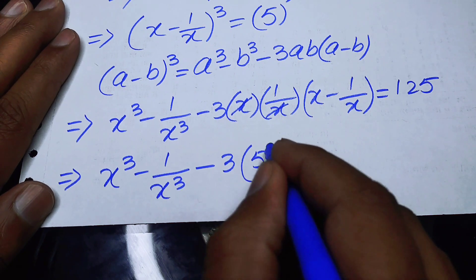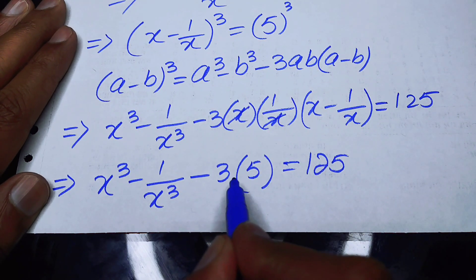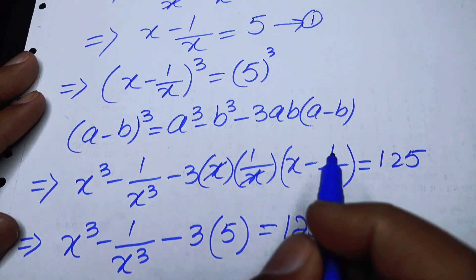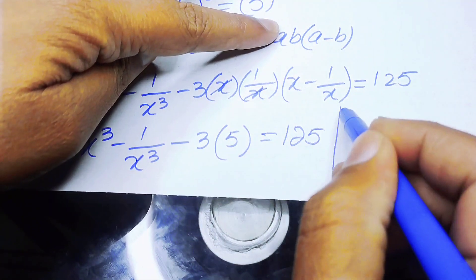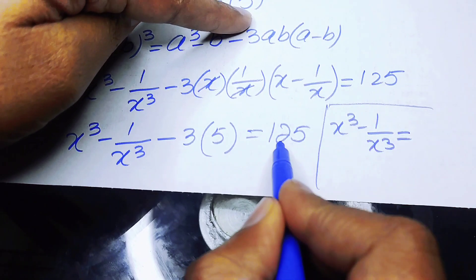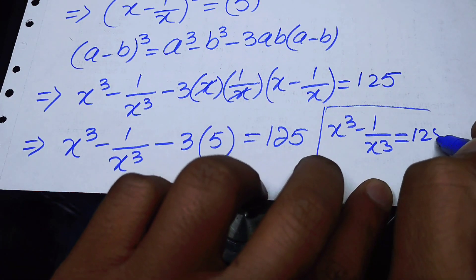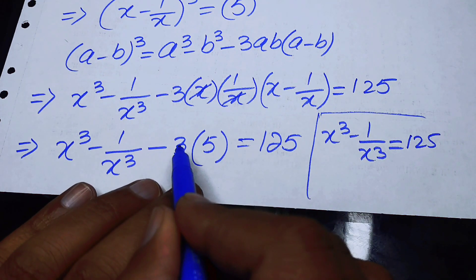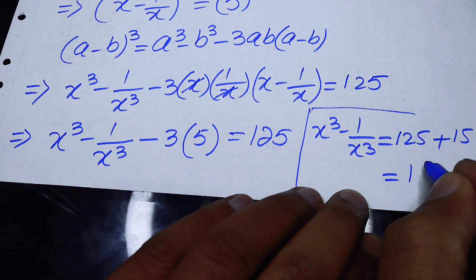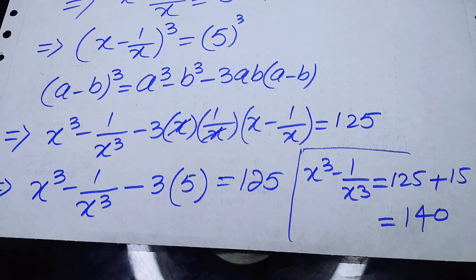Using equation 1, minus 3 times 5 becomes minus 15. Taking minus 15 to the right hand side it becomes plus 15, so we finally obtain x cube minus 1 over x cube is equal to 125 plus 15, which is 140. That is our final answer. Thank you so much for watching, please subscribe to my channel for more exciting videos.